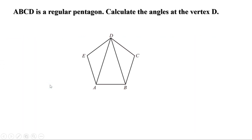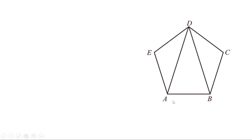ABCDE is a regular pentagon. Calculate the angles at the vertex D. Given that it is a regular pentagon, we have to find the angles at vertex D. There are three angles at this vertex. Since ABCDE is a regular pentagon, all its angles are equal and they are equal to 108 degrees.